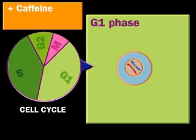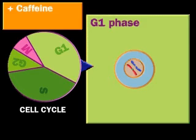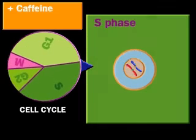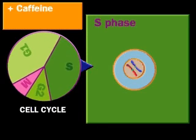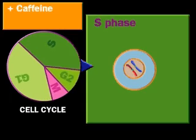Caffeine inactivates a feedback control mechanism that normally assures that the nucleus does not begin mitosis before its DNA is replicated. Here the cell cycle runs to completion in the presence of caffeine, because DNA replicated successfully.